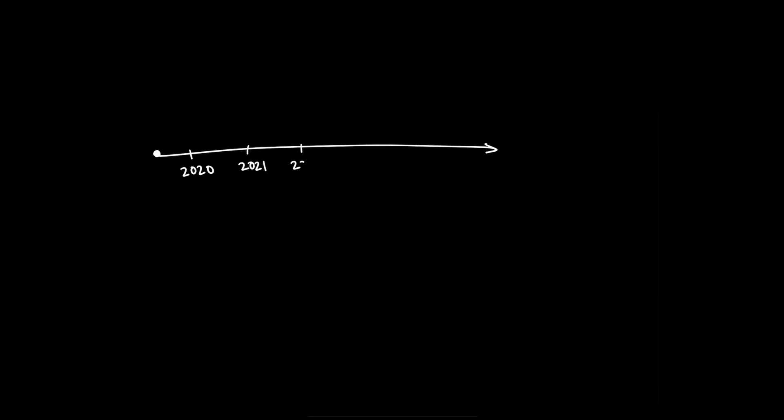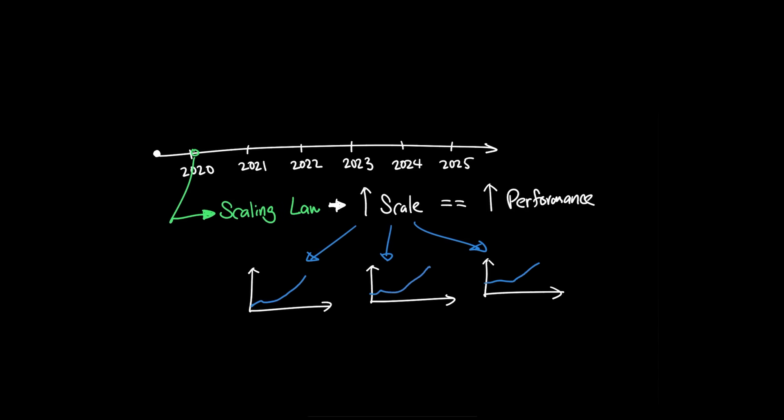After Scaling Law was released by OpenAI in January 2020, the industry focused on expanding the existing model to get better performance. That's because Scaling Law proposed that you can predictably improve the model's performance based on three key variables: size, data, and compute.